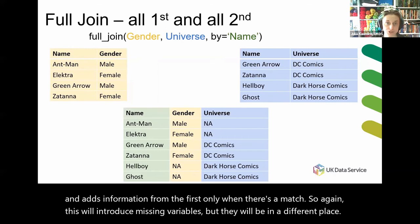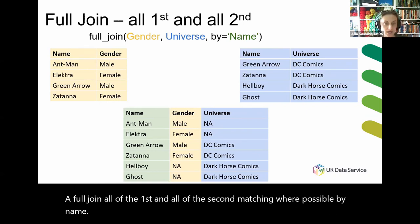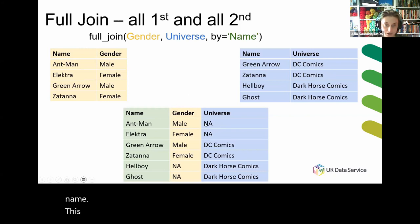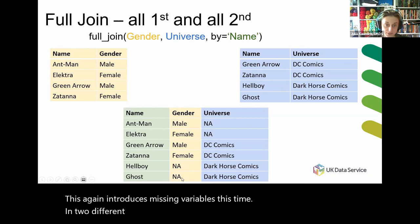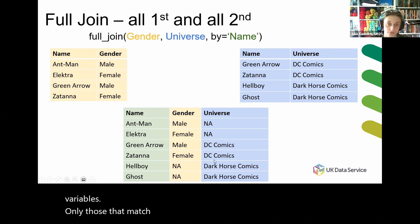A full join includes all of the first and all of the second, matching where possible by name. This introduces missing variables in two different places, because each potentially has missing values. Only those rows that match have the full non-missing variable rows.